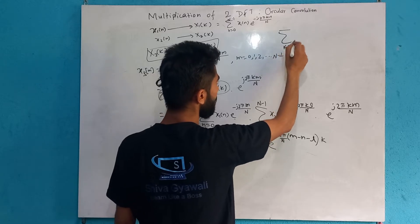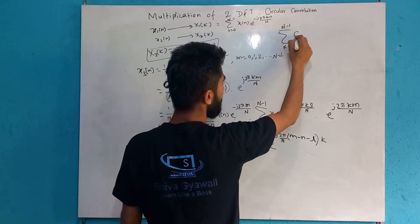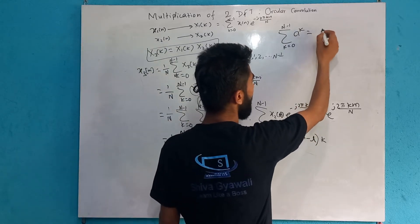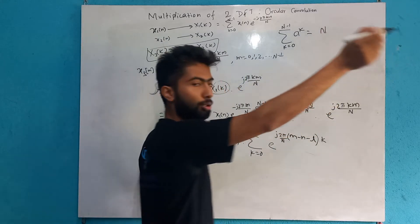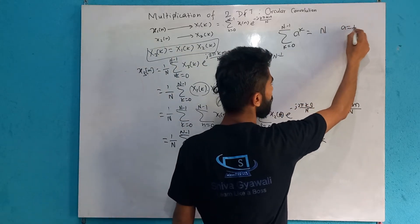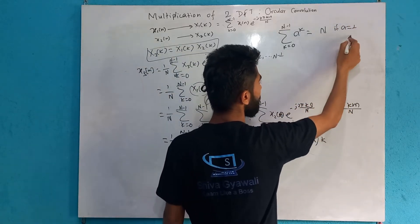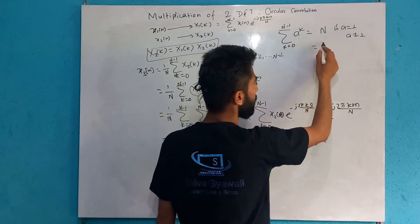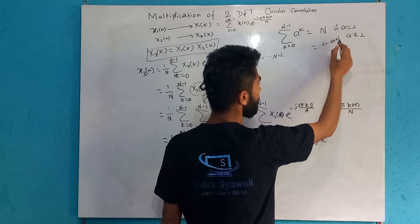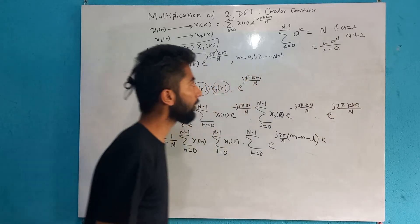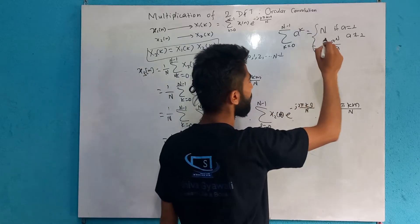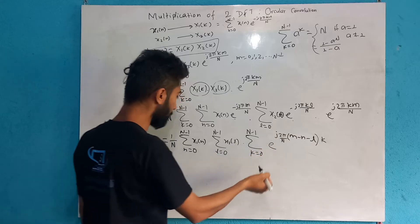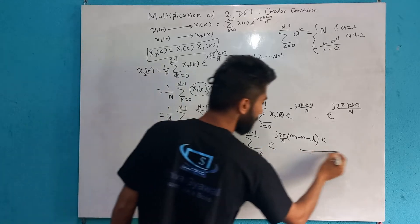So this is the summation of k equals 0 to N minus 1, of 1 to the power k. What do we have? This is the value: 1 plus 1 plus 1 is the summation of 1. So if a equals 1, if a equals 1, then what we have is 1 minus 1 to the power N over 1 minus 1. This is the number of k terms.